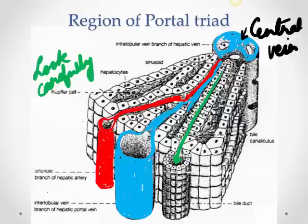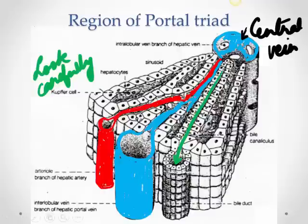The body economizes by pouring both venous and arterial blood into the sinusoid, so hepatocytes can take nutrition from venous blood and oxygen from arterial blood simultaneously, then send blood forward to the central vein. Bile does not open into the sinusoid — it travels separately. If bile were in the sinusoid, it would contaminate the blood circulating throughout the body.